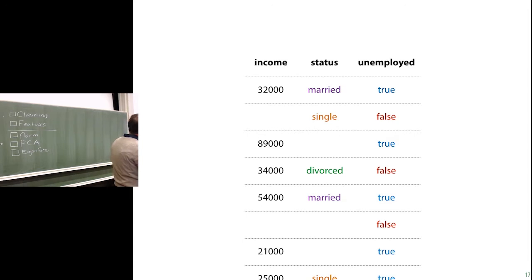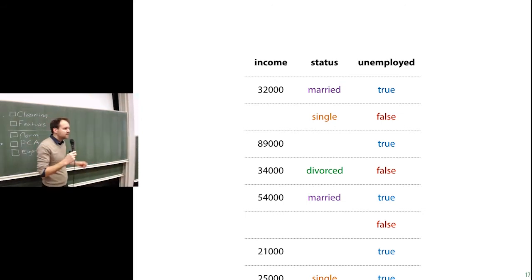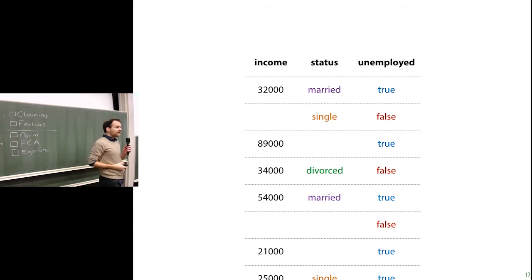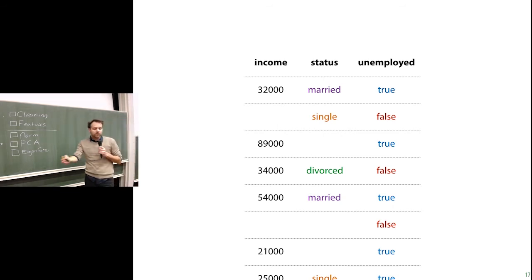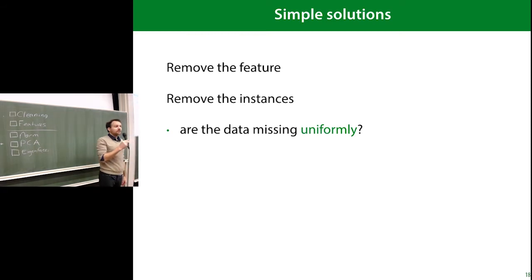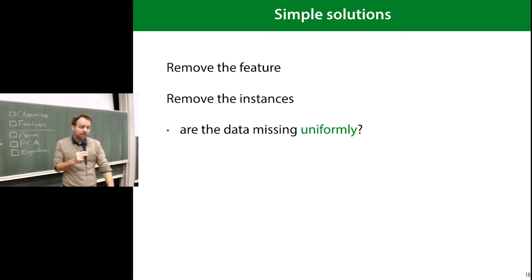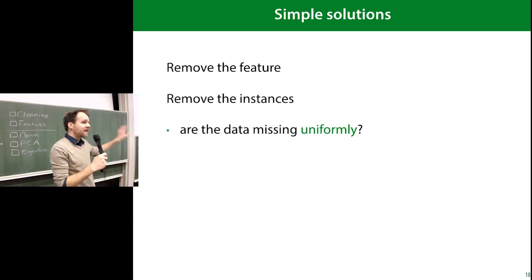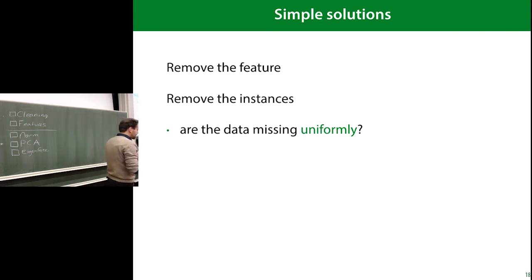Here's a basic dataset with one numerical feature and two categorical features, and as you can see some values are missing — that happens a lot. In natural data it's very rare to see data that is actually complete. If you get a dataset like this, the classifier or regression algorithm expects all your features to be complete, so you need to deal with it. The simplest way is to remove the feature column where items are missing — that's easy, but it can mean throwing away a lot of data.